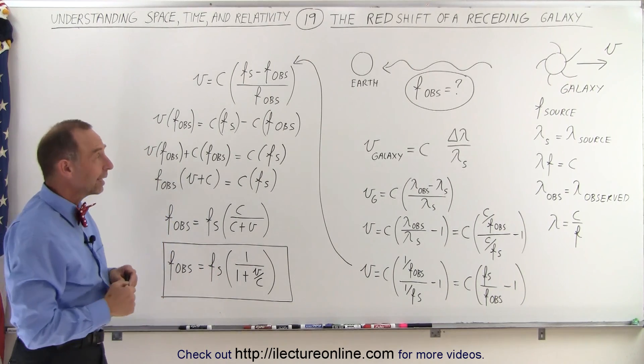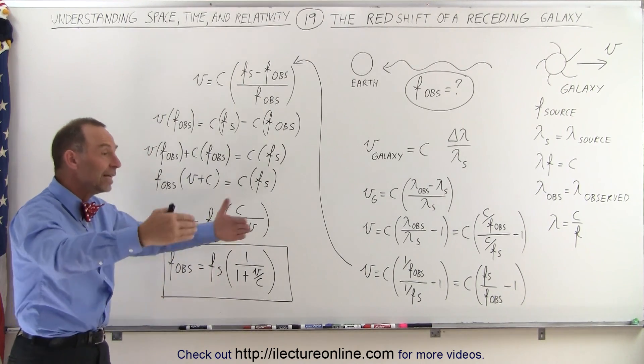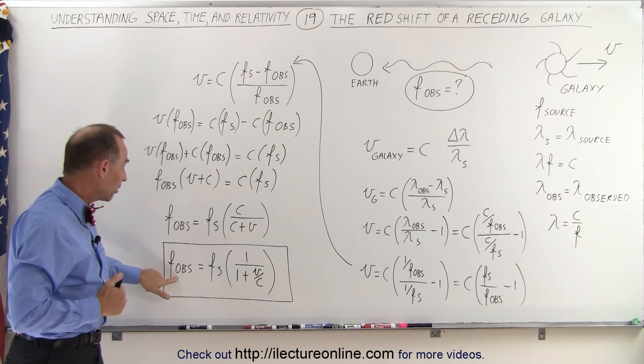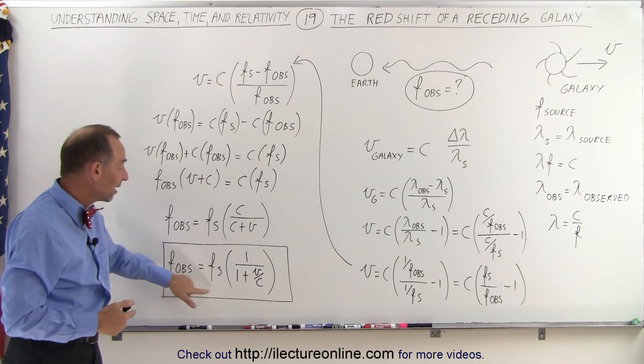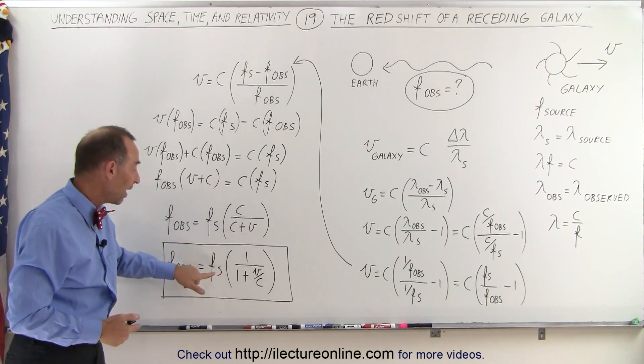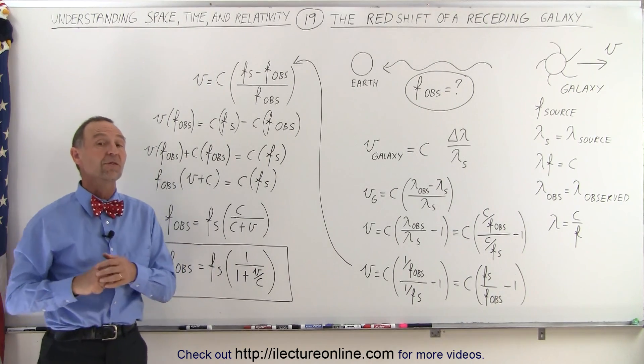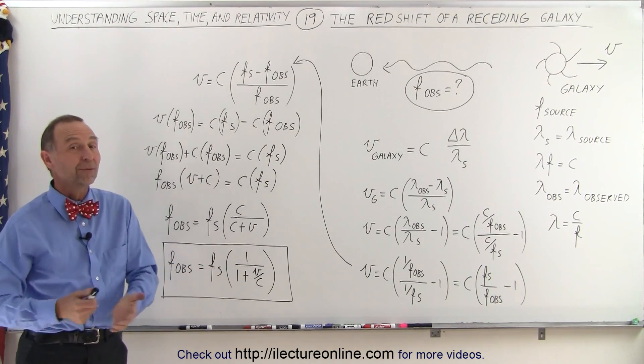And that's what we see in a lot of the galaxies in the universe. They're receding en masse, and therefore the frequency observed from each of the galaxies can be determined by the velocity that the galaxies have relative to their original frequency. And that's how it's done.